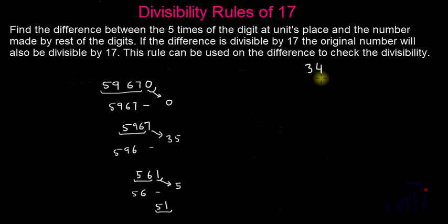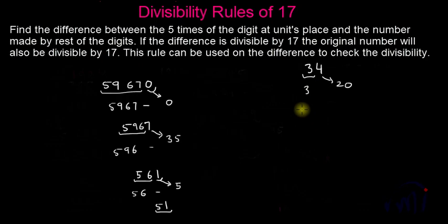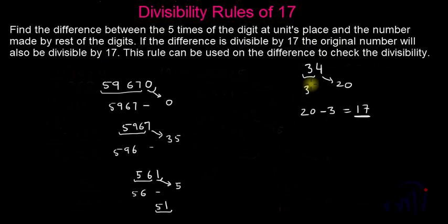Now let's check the divisibility of a smaller number — 34. We all know that 17 multiplied by 2 is 34, but I am taking it for a specific reason. If I multiply 4 by 5, we get 20, and the number made by the rest of the digits is 3. Subtracting 3 from 20 gives 17, and 17 is divisible by 17, so 34 is as well. The reason for this example is: when the number is small, five times the units digit may be larger than the number made by the rest of the digits. In that case, you subtract the smaller number from the bigger number when finding the difference.